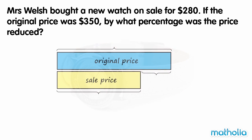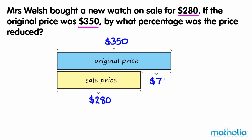Let's use a model to help find the answer. We know the sale price is $280 and the original price was $350. The difference in price is $350 minus $280, which equals $70.